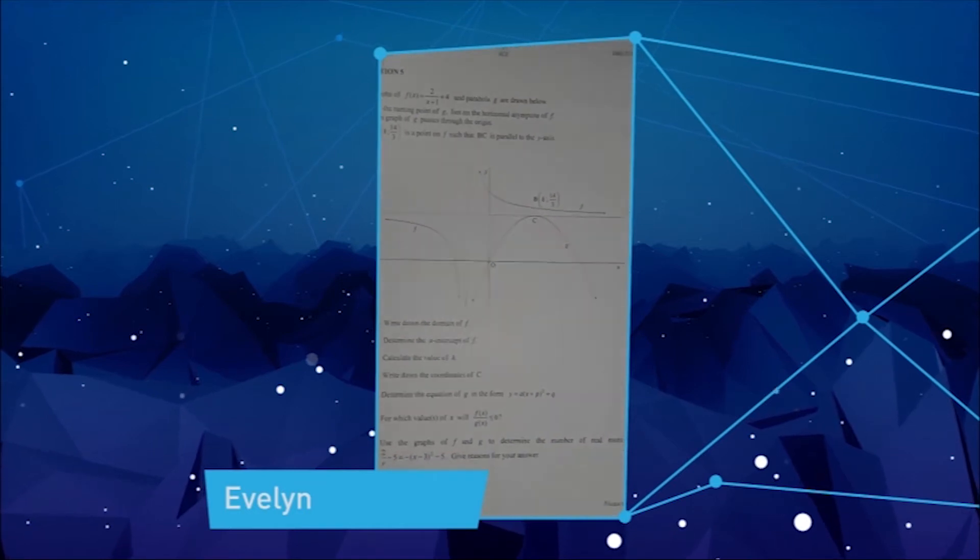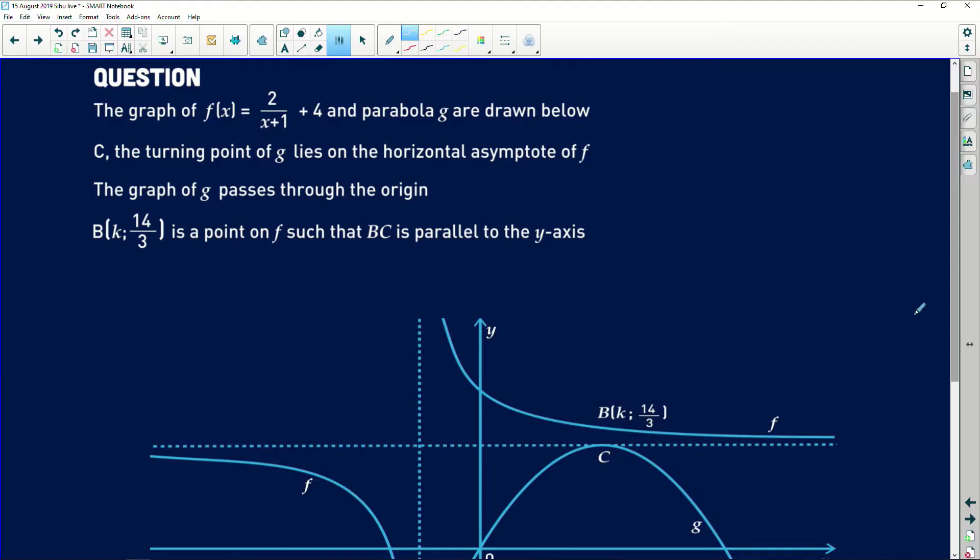You need to check what you understand. So the question says to us, the graph of f(x) = 2/(x+1) + 4 and parabola g are drawn below. C, the turning point of g lies on the horizontal asymptote of f. The graph of g passes through the origin.